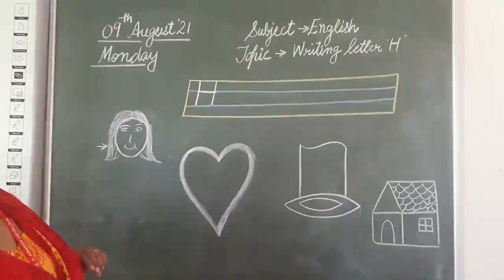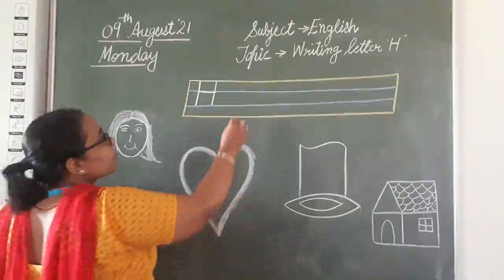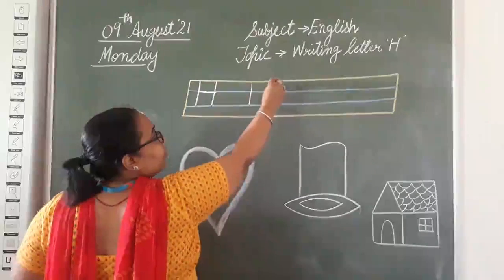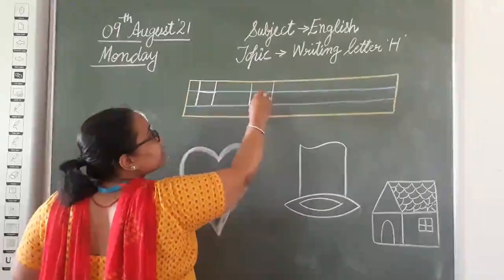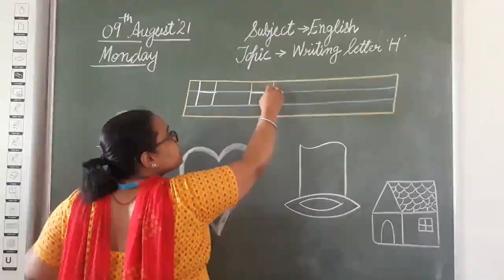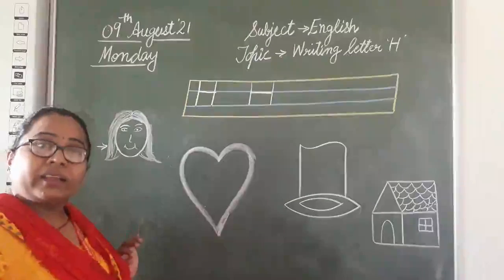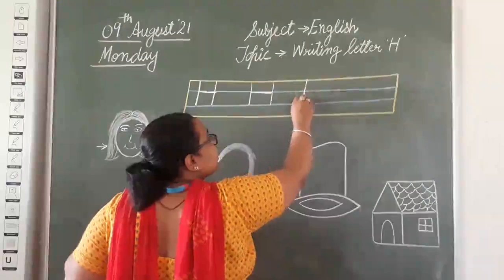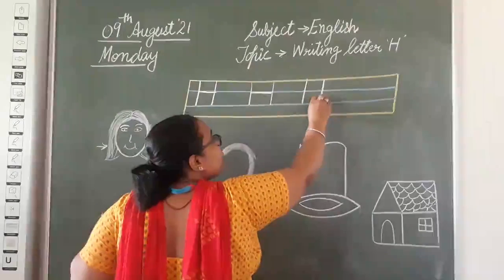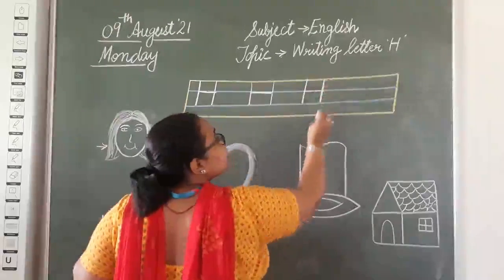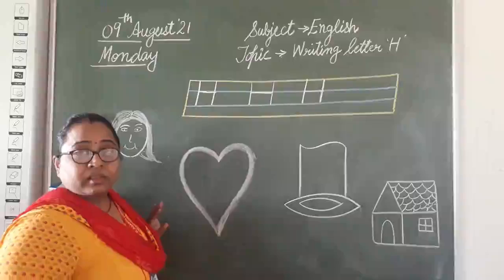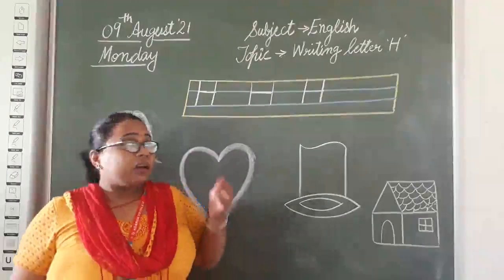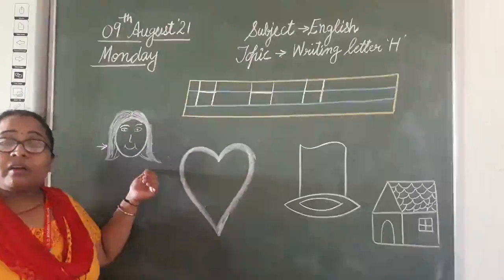Clear everyone? Let's just do it once again. First we will draw one standing line, another standing line on the right hand side like this, and we will join it with a sleeping line like this. Clear? So this is letter H. And what is the sound of this letter H? H says H. H says H. H says H — H head.